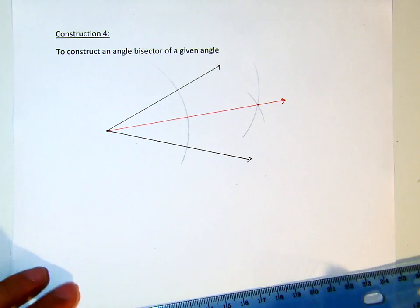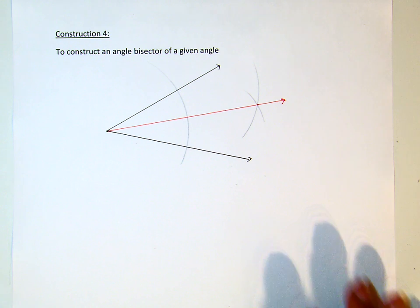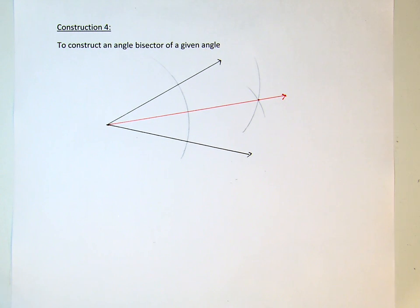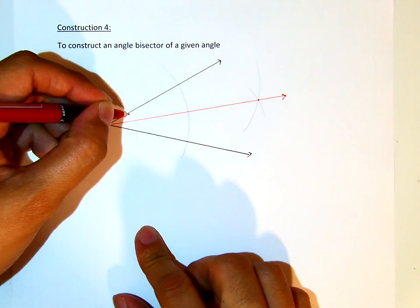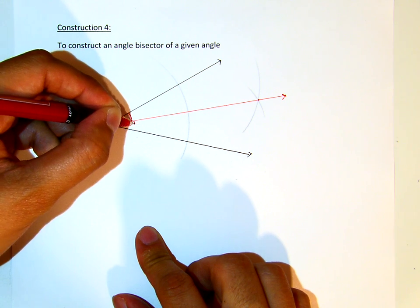That will be our angle bisector, such that this angle here is now congruent to the angle here.